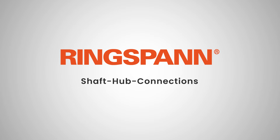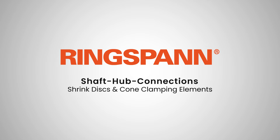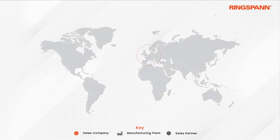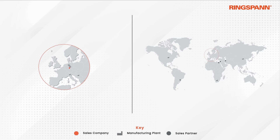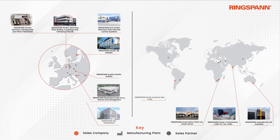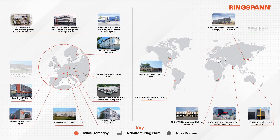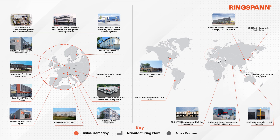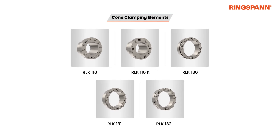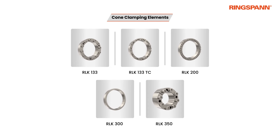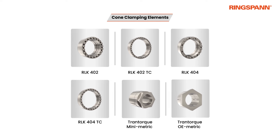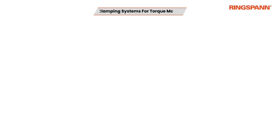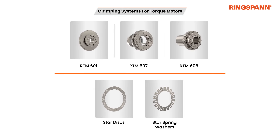Ringspan is a leading manufacturer of shaft hub connections like shrink discs and cone clamping elements. Ringspan is a global company with presence in all major countries, directly with own subsidiaries and agents. Ringspan has a wide range of products and solutions for various industry applications with specific needs. In the following content, we would like to explain the products and features that Ringspan can offer to our customers worldwide.